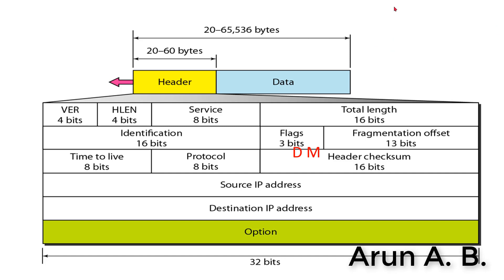The length of the Protocol Data Unit (PDU), that is the length of the complete fragment, is considered in the field called Total Length, which is 16 bits. Another important field is the Identification field. When the fragments are subdivided into packets, all of them will be given the same identification number.